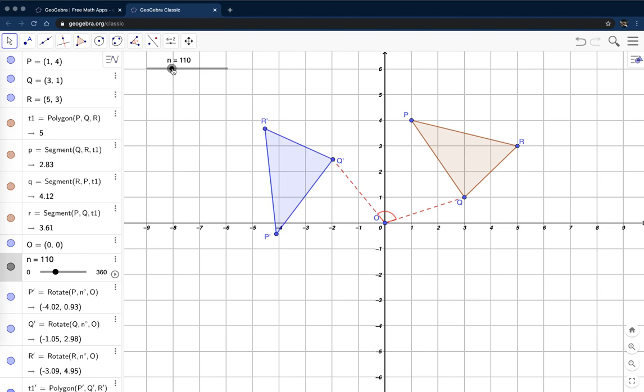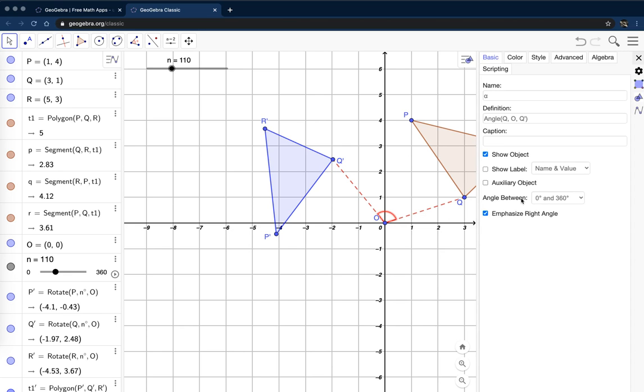And now as I change the angle, well, maybe I do want it to say the angle measure. So I'm going to right click on that. Go to settings. Show value. So I didn't want the name and value, just value I selected.